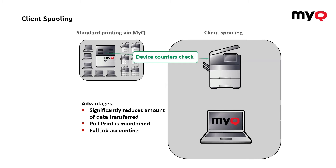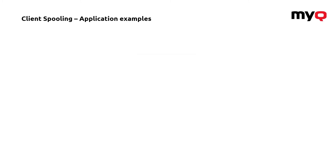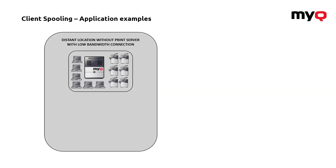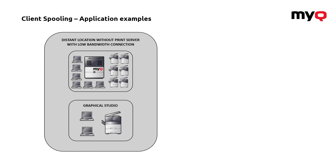Now let me show you a few examples of how you can use client spooling at a customer site. The first example is a distant location without a print server with a low bandwidth connection — for instance, a graphical studio producing quite large files. You definitely would not want those files sent to the server and back, especially over a weak connection. Instead, everything is done locally. The only interaction between the site and the server is when the metadata is sent and when statistics are uploaded. You get full, secured printing without needing a print server at the distant site.